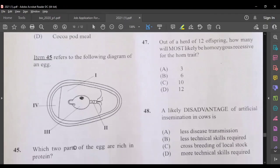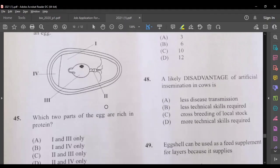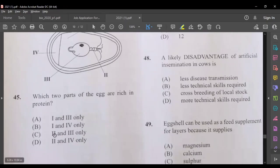Question 45, before I do this diagram, which two parts of the egg are rich in protein? We should have structure 1 and structure 3. Structure 1 and 3, that's the most suitable answer there, A.